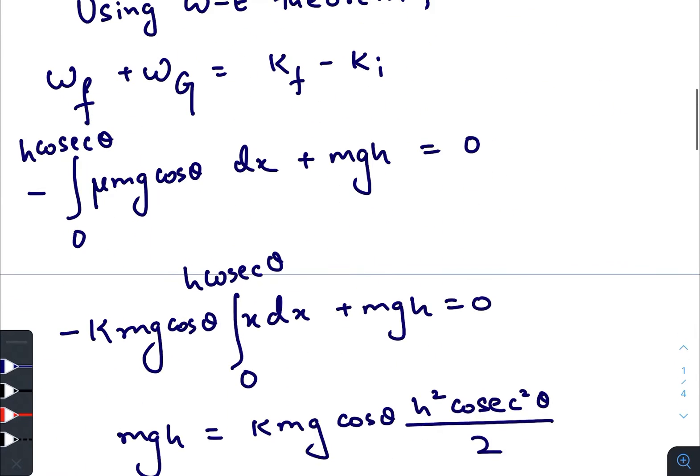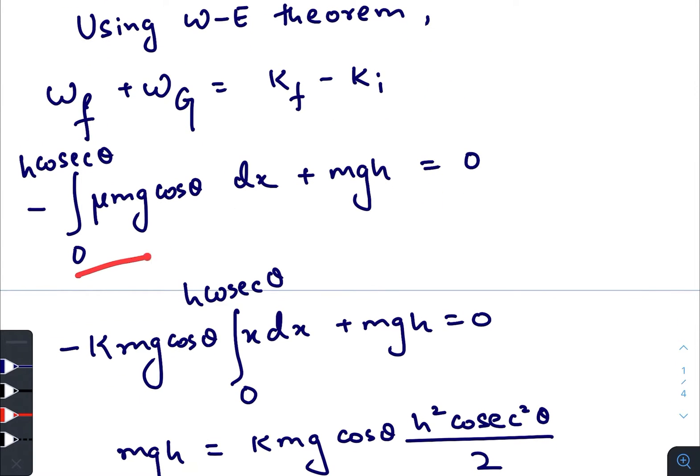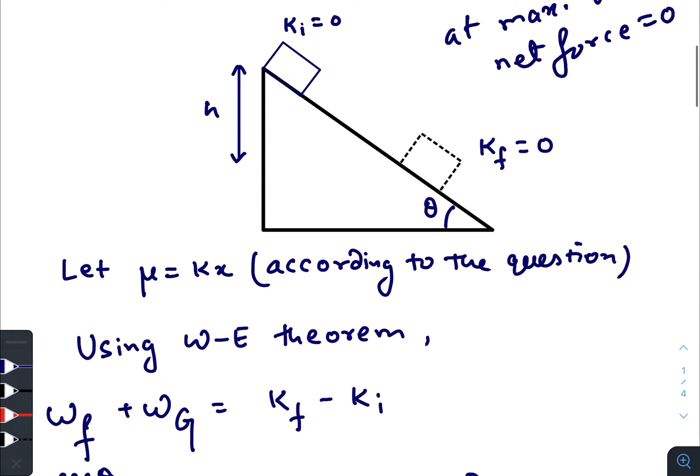So we can write that work done by the friction and gravity equals to final kinetic energy minus initial kinetic energy. Work done by friction is μ mg cos theta dx with a negative sign and the limit goes from 0 to h cosec theta. If this is h, so this would be h cosec theta.